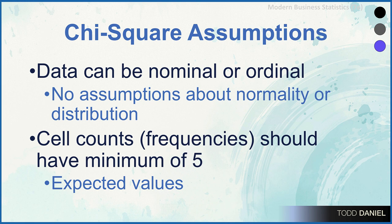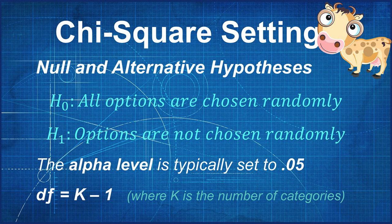Let's start with the assumptions of that chi-square test. First, the data can be nominal or ordinal counts — something we couldn't do with scale-level data. There are no assumptions about the normality or distribution of the data; chi-square is a distribution-free test. However, in the cell counts, the expected values should not have any frequencies below 5. The minimum each cell should be 5, and there should not be any zero counts, especially for the observed frequencies.